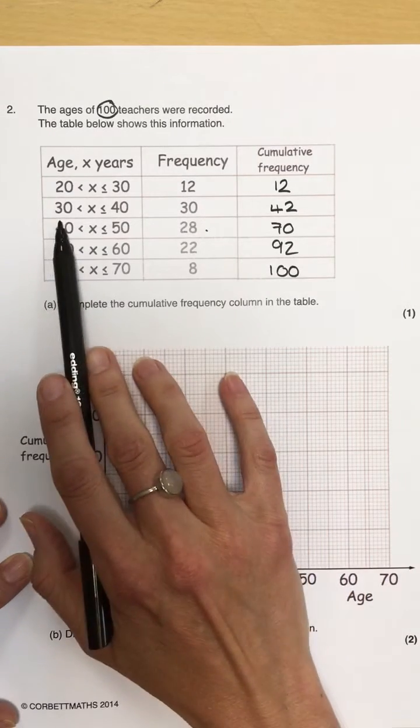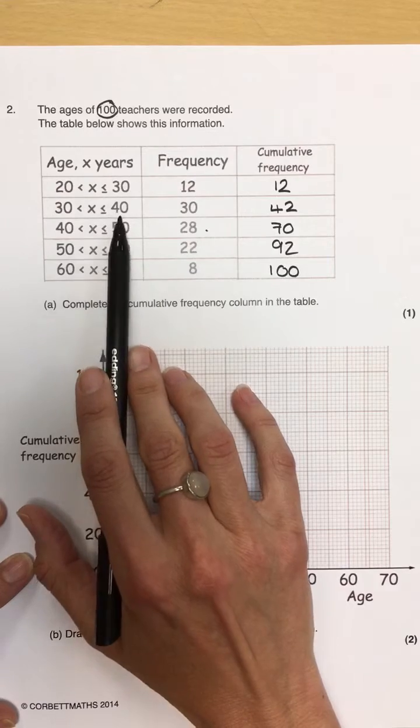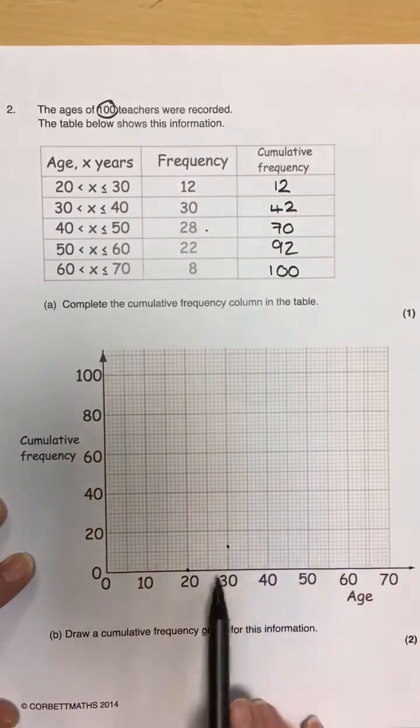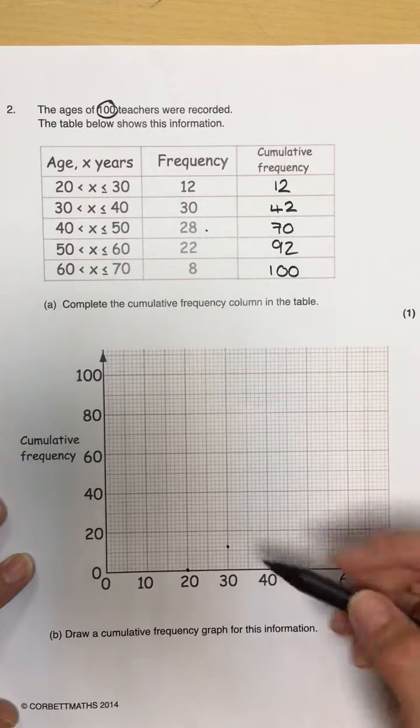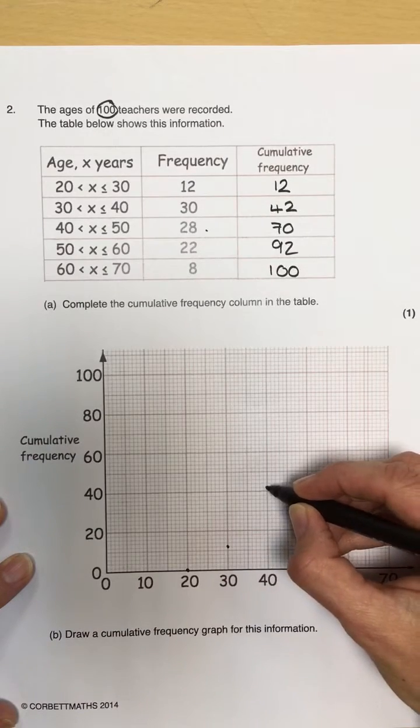Moving on to the next column. Between 30 and 40, so when it gets to 40, my cumulative frequency is 42. So, when it gets to 40, I must plot it at 42.